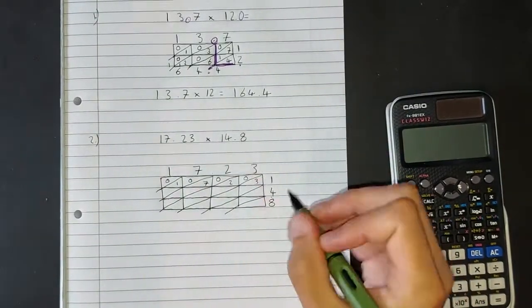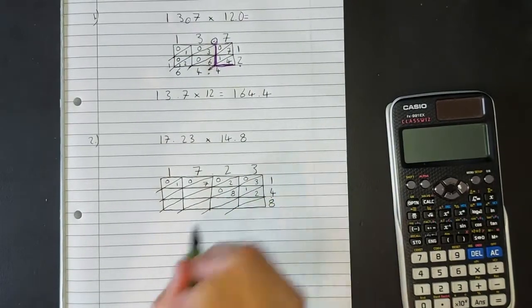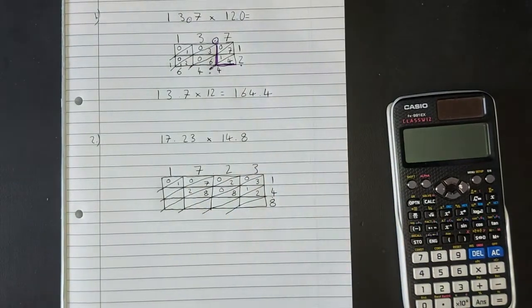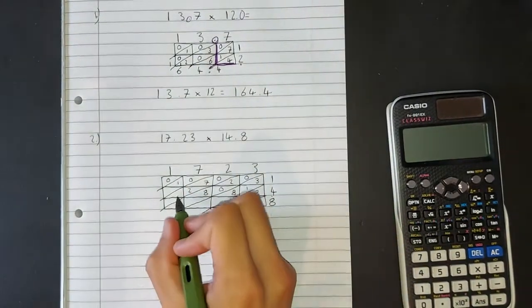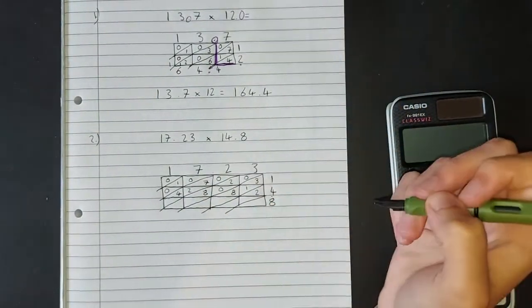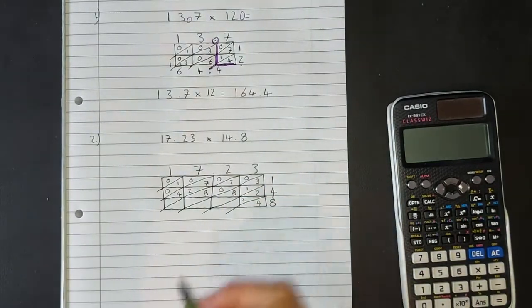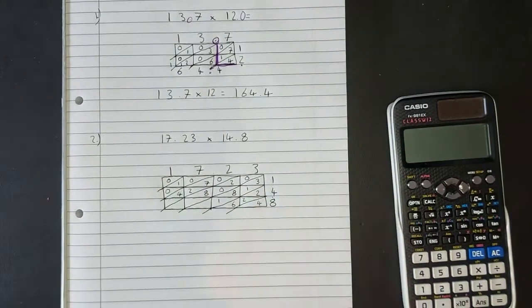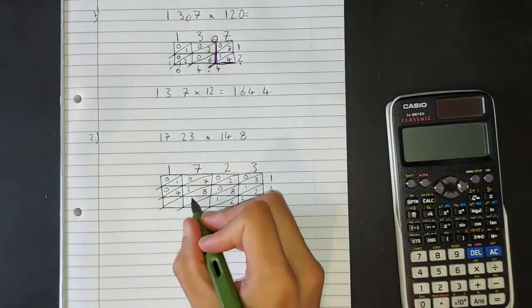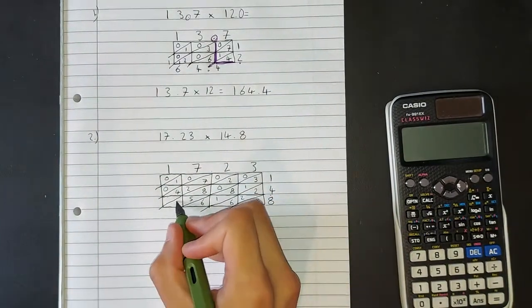Next row, 4 times 3, 12. 4 times 2 is 8. 4 times 7 is 28. And 4 times 1 is 4. Then we have 3 multiplied by 8, which is 24. And we have 2 times 8, 16. And then we have 7 times 8, which is 56. Then we have 1 times 8, which is 8.